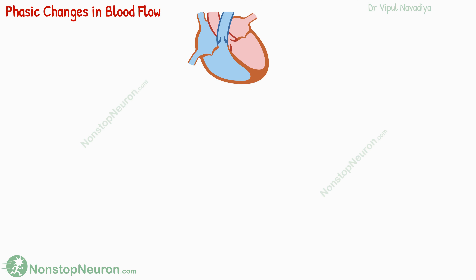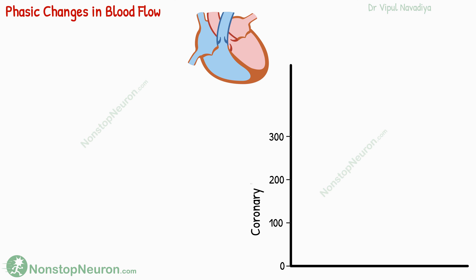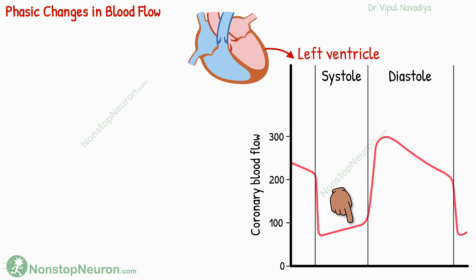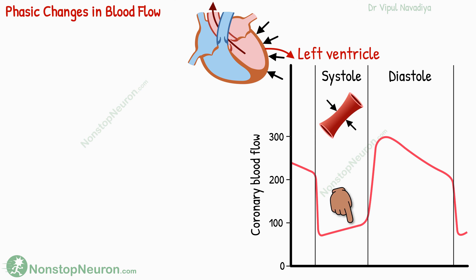This blood flow is not uniform throughout the cardiac cycle. If we draw the graph of blood flow in the left ventricle during different phases of the cardiac cycle, during systole the blood flow decreases, and during diastole it increases. This is because the left ventricle pushes blood into systemic circulation which has very high resistance. So during systole, it contracts very forcefully. This strong forceful contraction compresses the vessels within the wall of the left ventricle, so the blood flow there decreases. During diastole, the muscle mass relaxes, so there is no compression on the vessels and the blood flow increases. Thus, the left ventricle mainly receives blood during diastole.